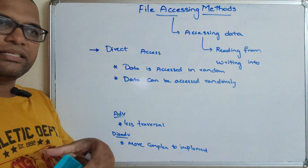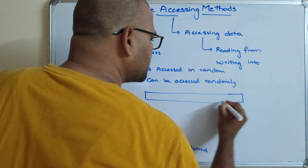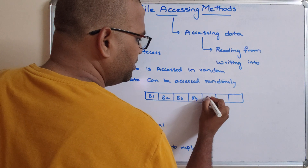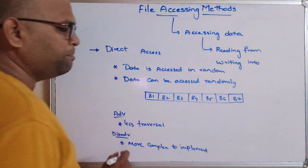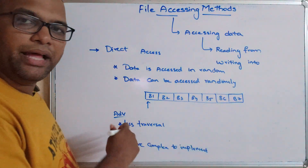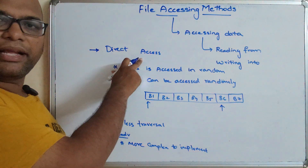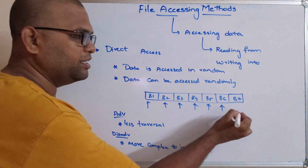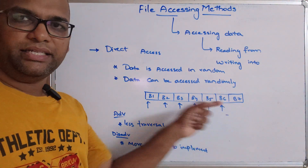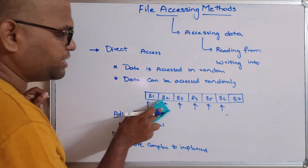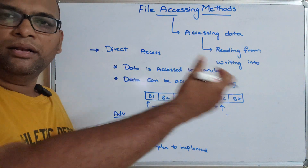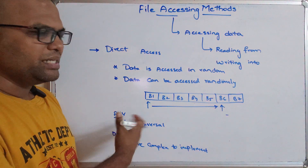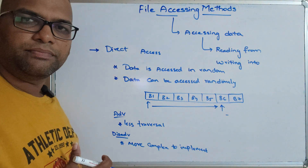For example, if our file consists of blocks B1, B2, B3, B4, B5, B6, and B7 — if we are at the beginning and want to access B6, in direct access we can move directly to B6. In sequential access, we'd have to read B1, B2, B3, B4, B5, and then B6. So direct access allows us to select the required block directly, though it is a bit more complex to implement with very little traversal needed.